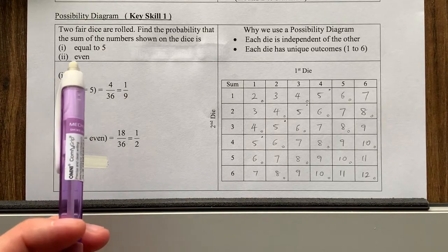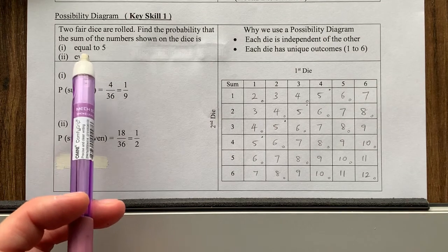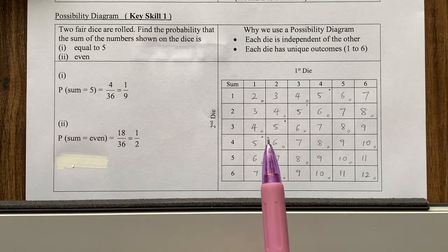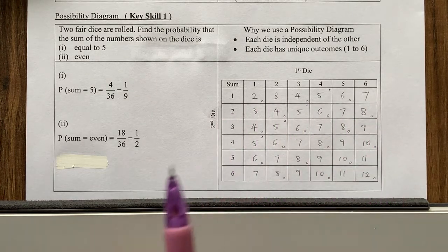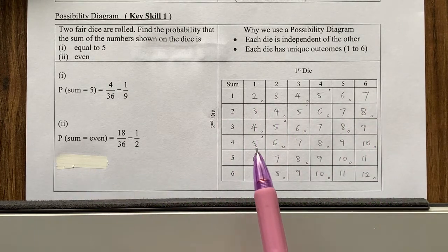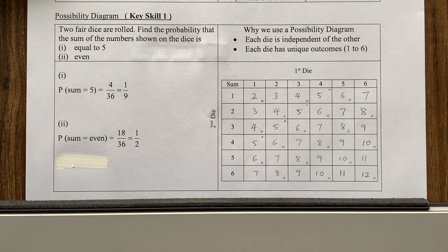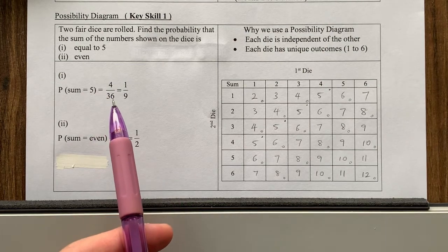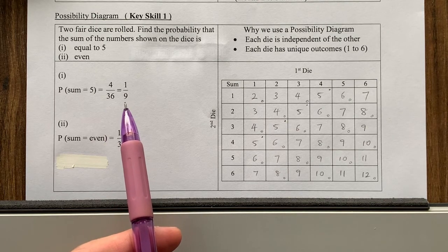So you can see what happens is when we say the probability that the sum is equal to five. What I simply do is I come here and I just figure out out of the 36 possibilities, how many are five? So in this case, it's here. One, two, three, four. There are four cases that it can be five. That's why the probability is four out of a total possible 36. And of course, you reduce to lowest term one over nine.